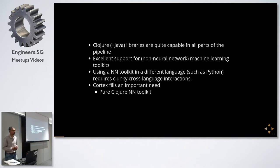You end up dumping your training data to file and have one team building the model, and then they give you a model in some way and you take that model and use it in production. There's a bit of a break in the flow there. Cortex fills this important need where it's a pure Java, pure Clojure neural network toolkit. You can do all parts of your pipeline—cleaning, training, inference and running it in production all in Clojure.